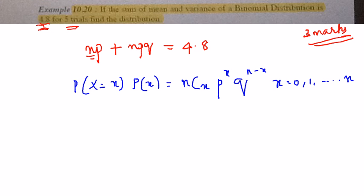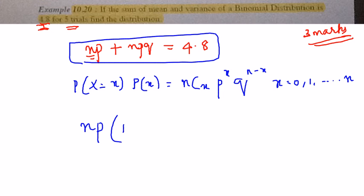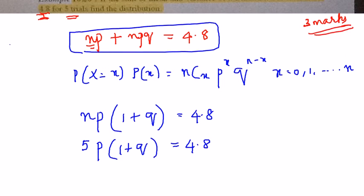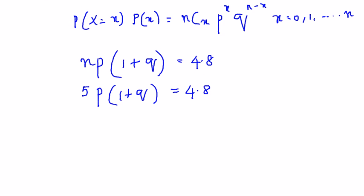Where x takes a value of 0, 1, up to n. Now let's get started. From this equation I am going to take np common: np(1+q) = 4.8. I know that n = 5, so 5p(1+q) = 4.8.